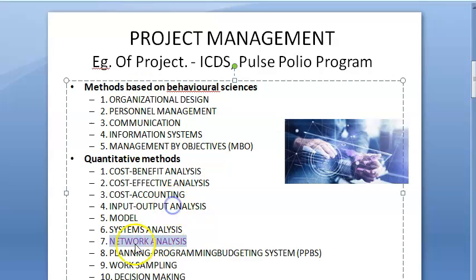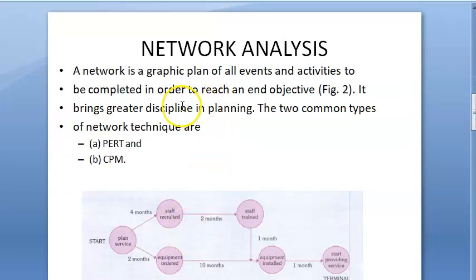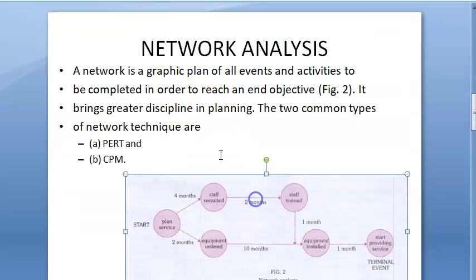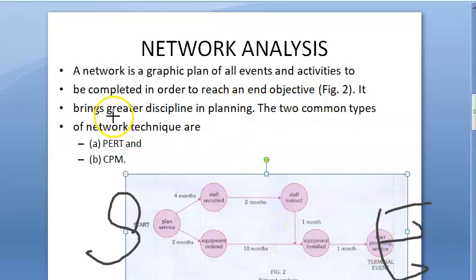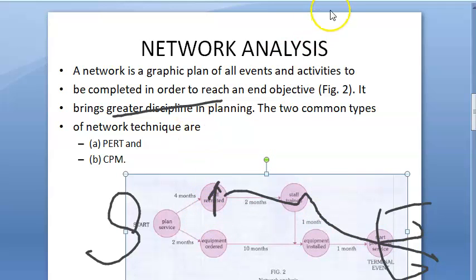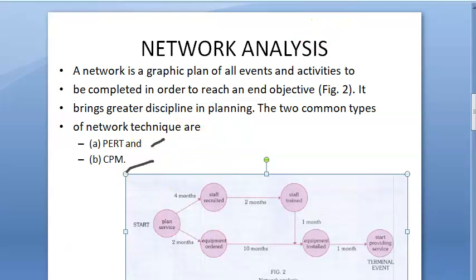So what is network analysis? You will make a network — a graphic plan of all the events and activities that you have to complete — in which order you will complete them to reach your end objective. It brings greater discipline in planning. There are two types of network technique: PERT and CPM.